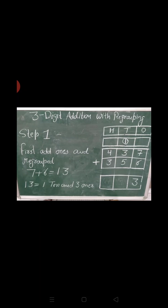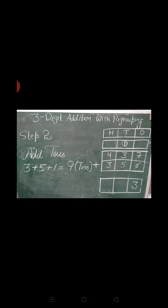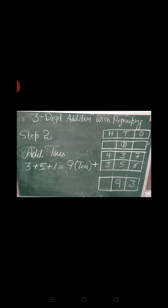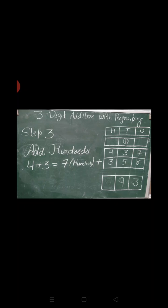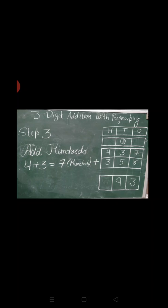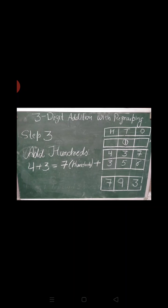We know 13 equals to 1 ten and 3 ones. So we write 3 in the ones place and 1 in the tens place. In the second step, we add tens: 3 plus 5 plus 1 equals to 9 tens, and we write 9 in the tens place. In the third step, we add hundreds: 4 plus 3 equals to 7. So we write 7 in the hundreds place.